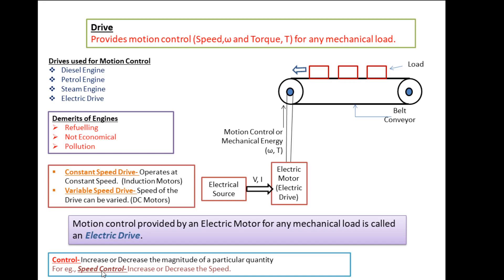Based on application, speed drives are divided into two types: constant speed drives and variable speed drives. In a constant speed drive, the drive operates at constant speed — induction motors are mostly used for this. In a variable speed drive, the speed can be varied — DC motors are traditionally used, but with power electronics such as thyristors, IGBTs, and MOSFETs, induction motors are now also used as variable speed drives.